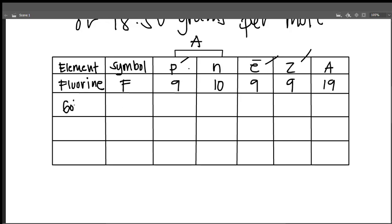Let's have another one. We have 79 protons and 197 for mass number. So we fill in: protons are the same as electrons and the same as atomic number — all 79.